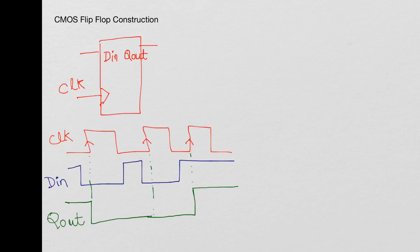A flip-flop is supposed to be looking at only the rising edges of the clock. It's not like a latch, where when enable is high it passes DIN to the output, and when enable is low it latches the data. Here, it is only at the rising edges of the clock that it looks at the data and puts it on the output.